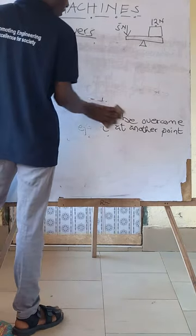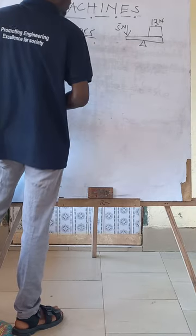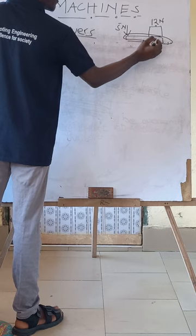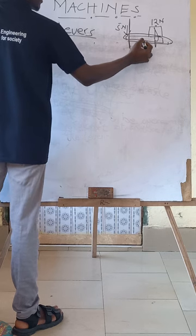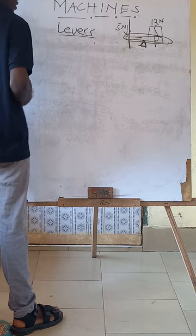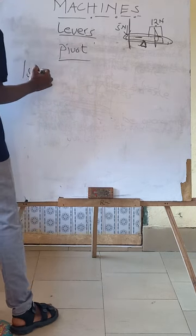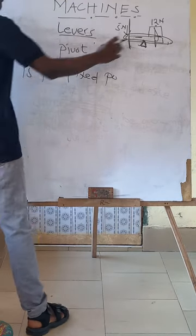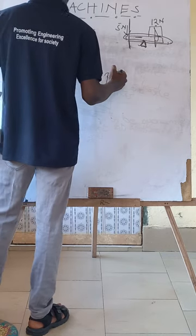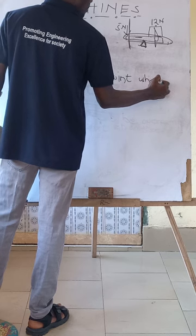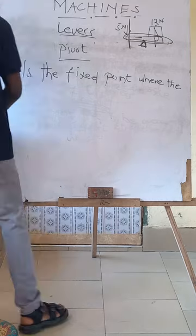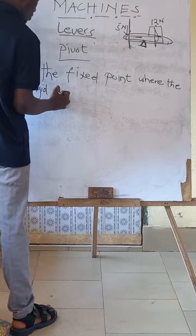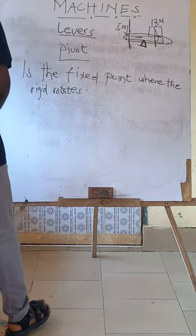From the diagram, the pivot is where the whole rigid bar rotates. This bar goes up, this comes down — up and down — so this is where the rigid bar turns or rotates. The pivot is the fixed point; it's always a fixed point — it doesn't move, it stays where it is. So the pivot is the fixed point or turning point where the rigid bar rotates.